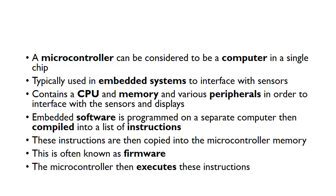Embedded software is programmed on a separate computer and then compiled into a list of instructions. These instructions are then copied into the microcontroller memory. We often call this firmware, and then the microcontroller executes the instructions that are stored in its memory.